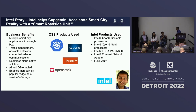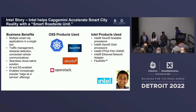Edge-native applications — the refactoring is to identify a root of trust not somewhere in the cloud, because you may have disconnected operations. When it's disconnected, you can't trust a certificate authority in the cloud. It has to be a root of trust on the device itself. So again, your design principles change.